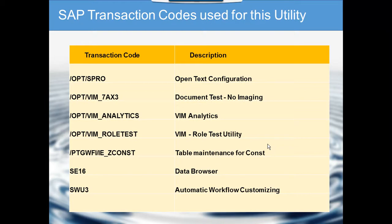The fifth transaction is very important for customization — it is for table maintenance for a constant table in OpenText. Since it is an add-on, here you can maintain all the custom or extending pieces that VIM provides. In this tutorial we will cover this table to maintain the pre-process settings. The sixth is SE16, the data browser, where we can check the important tables associated with VIM configuration.